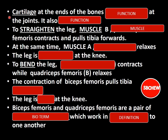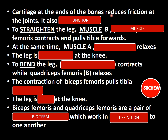Next, discuss cartilage, which is found at the ends of bones. Cartilage has two functions: it reduces friction between the bones at the joints, and it absorbs shock.